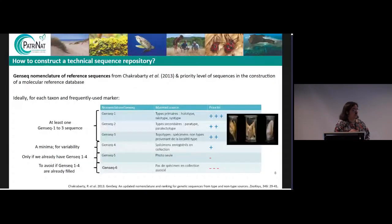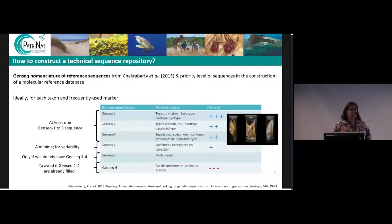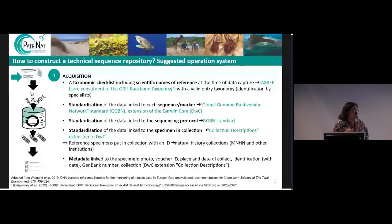How to construct this technical sequence repository? It's currently being built and is heavily based on GenSec nomenclature, following a tiered approach: at minimum, one GenSec type 1 to 3 sequence — that is, a sequence from type specimens in a collection; if possible, also a GenSec type 4 sequence from a random specimen of the species in collection that is not a type; and if nothing else is available, sequences from specimens for which we only have pictures or no other information, though this is really not recommended.